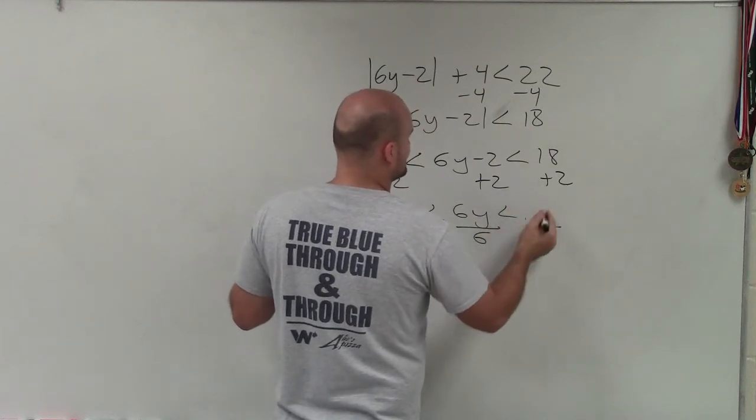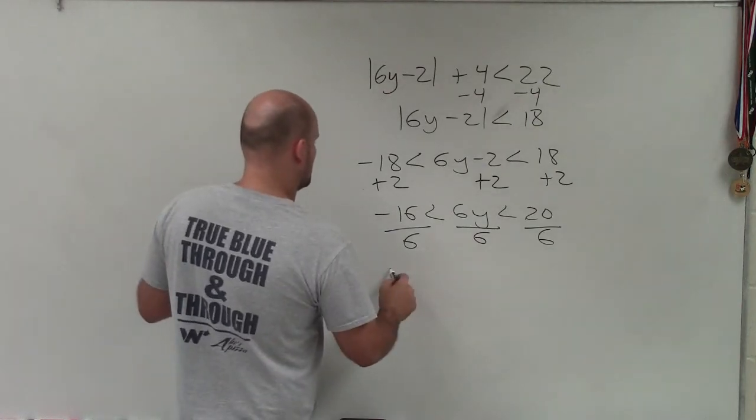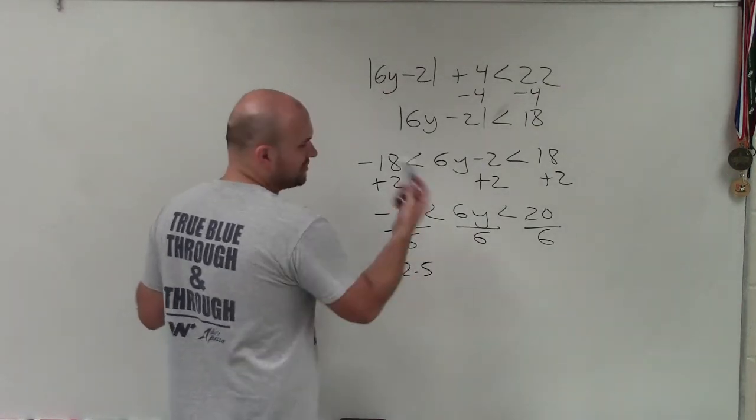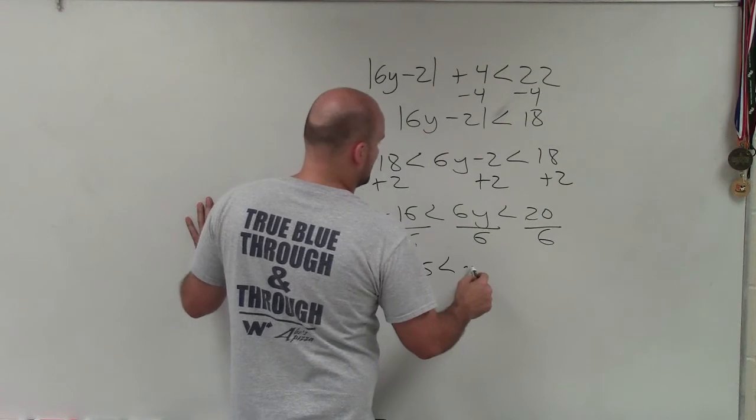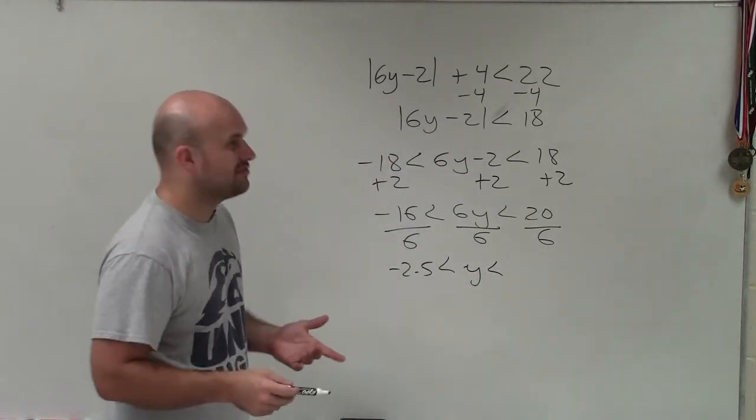What am I doing? 18 plus 2 is 20. Therefore, that becomes 20. So negative 2.5, right? You can reduce the fractions: less than y, which is less than, let's see, 3 and 1 third.